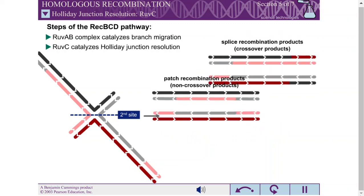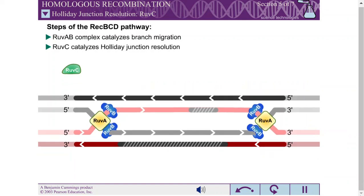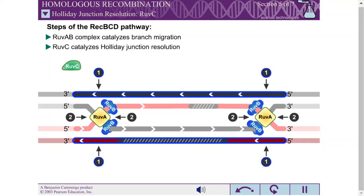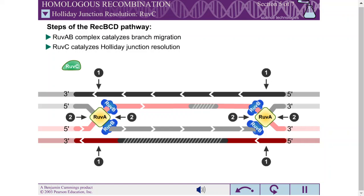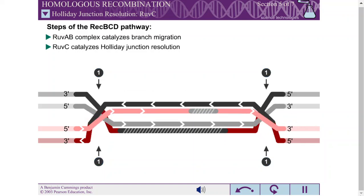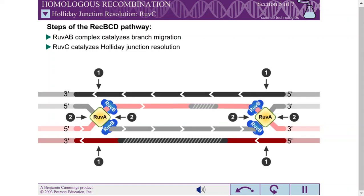In the REC-BCD pathway, Holliday junction resolution is catalyzed by the RUV-C endonuclease. For each Holliday junction, there are two possible cleavage sites. Site 1 consists of the two DNA strands that have not crossed over. Site 2 consists of the two DNA strands that have crossed over. If both junctions are cleaved in the same way — whether both at Site 1 or both at Site 2 — patch recombination products result.